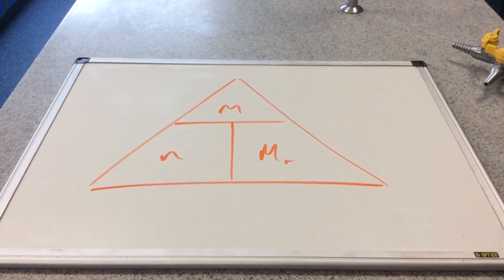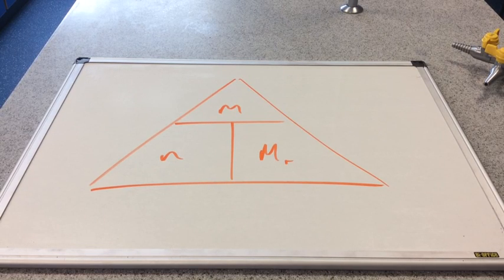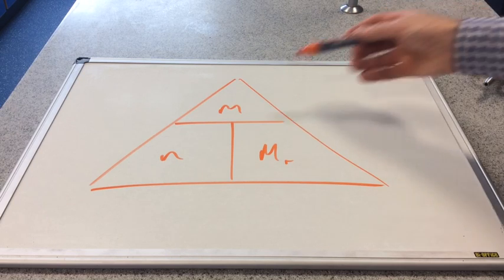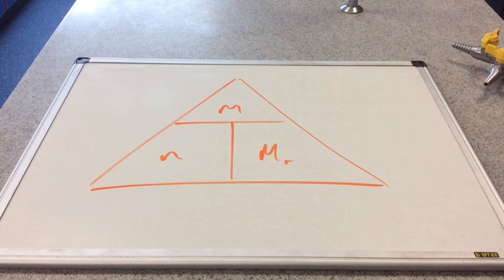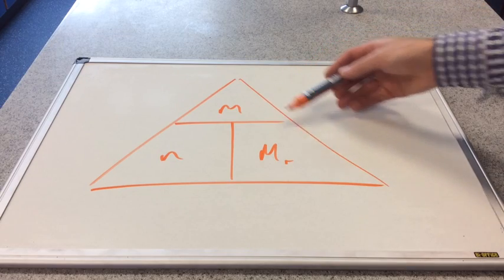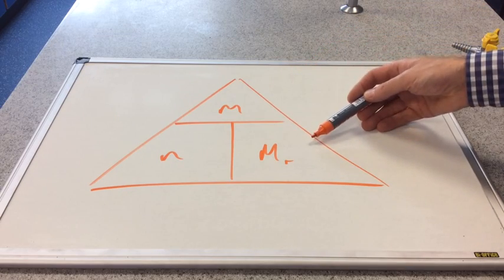Because these calculations involve masses of chemicals, we better just remind ourselves of the formula triangle — Mass, Moles, MR. So for example if we wanted to calculate the number of moles of something, we would divide the mass that we've got by the MR of the chemical.